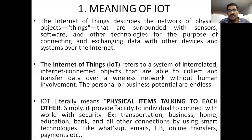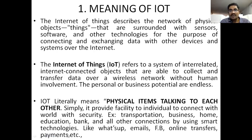Physical items talking to each other. It provides facility to individuals to connect with the world with security. For example: transportation, business, home, education, banks, and all other connections by using smart technologies like WhatsApp, email, Facebook, Twitter, online transfers, payments like PhonePay and Google Pay, and transactions using smart apps like Flipkart and Amazon. These are the different apps in our mobile.